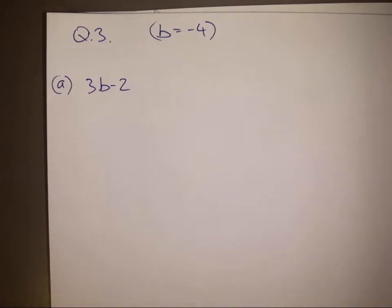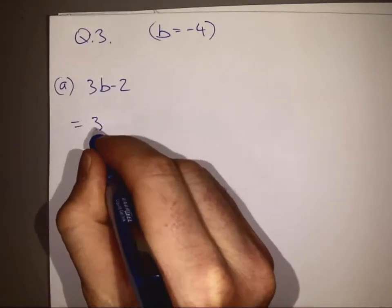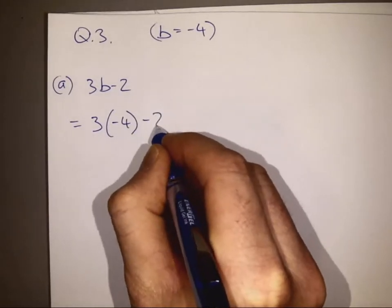Here we are told b equals minus 4 and we have to evaluate this expression here, 3b minus 2. We just sub in minus 4 for b, like that.